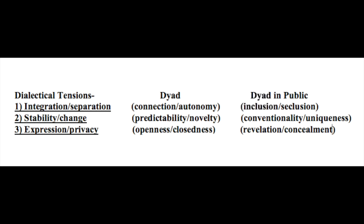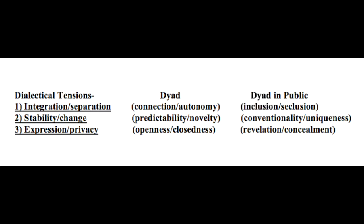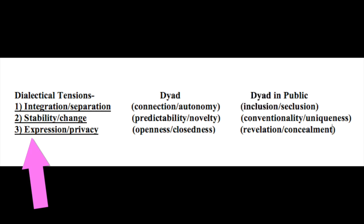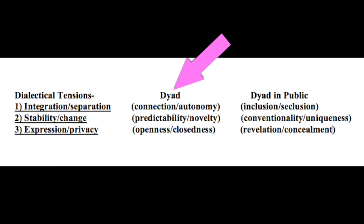So take a look at this chart — write it down, take a picture of it, but you need to have this. Let me walk you through it. In the top left corner we have dialectical tensions, and listed underneath are the three dialectical tensions. Moving over one column, we have dyad, and then dyad and public as the next column. So first, let's go down to number one: integration separation.